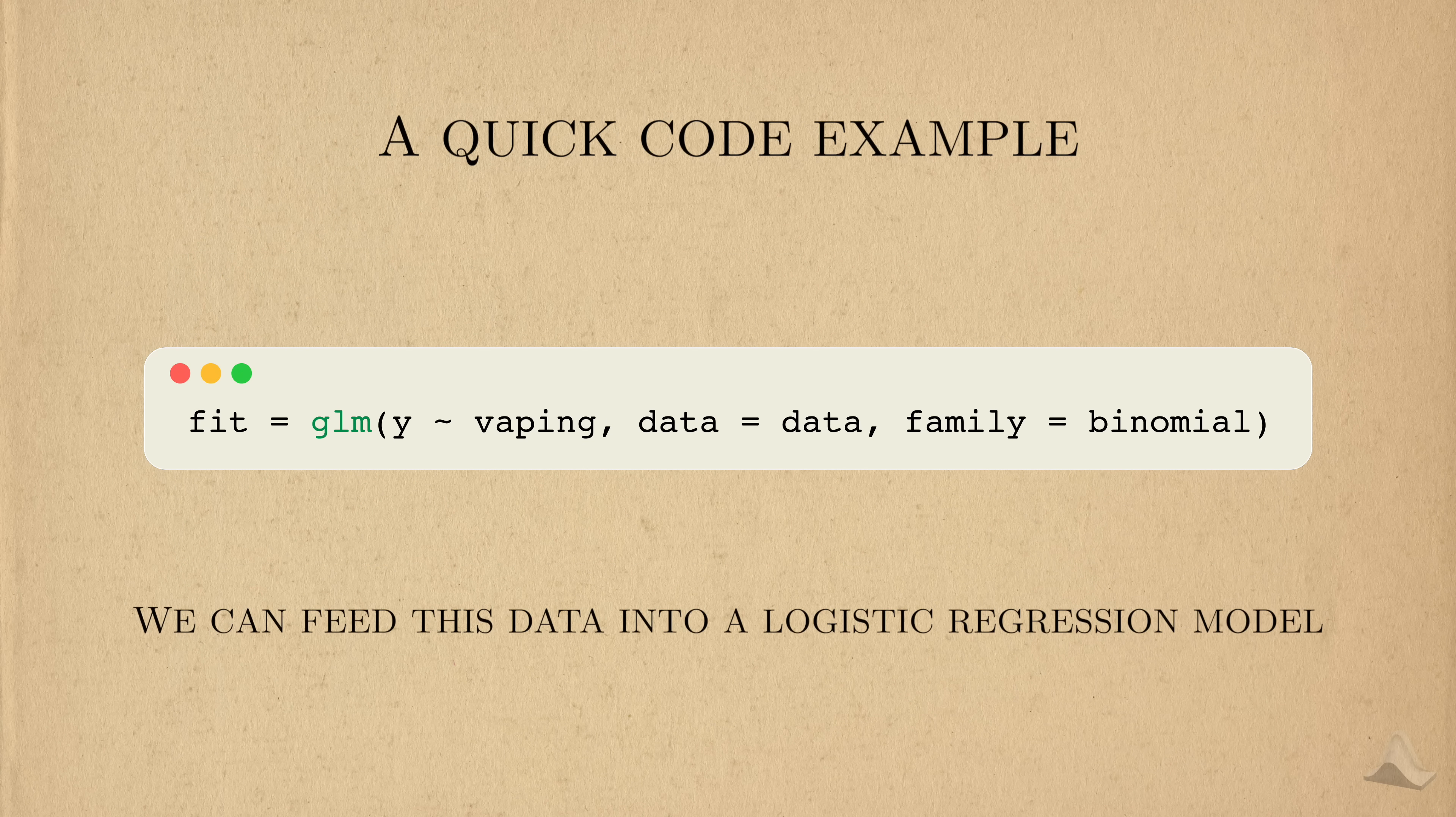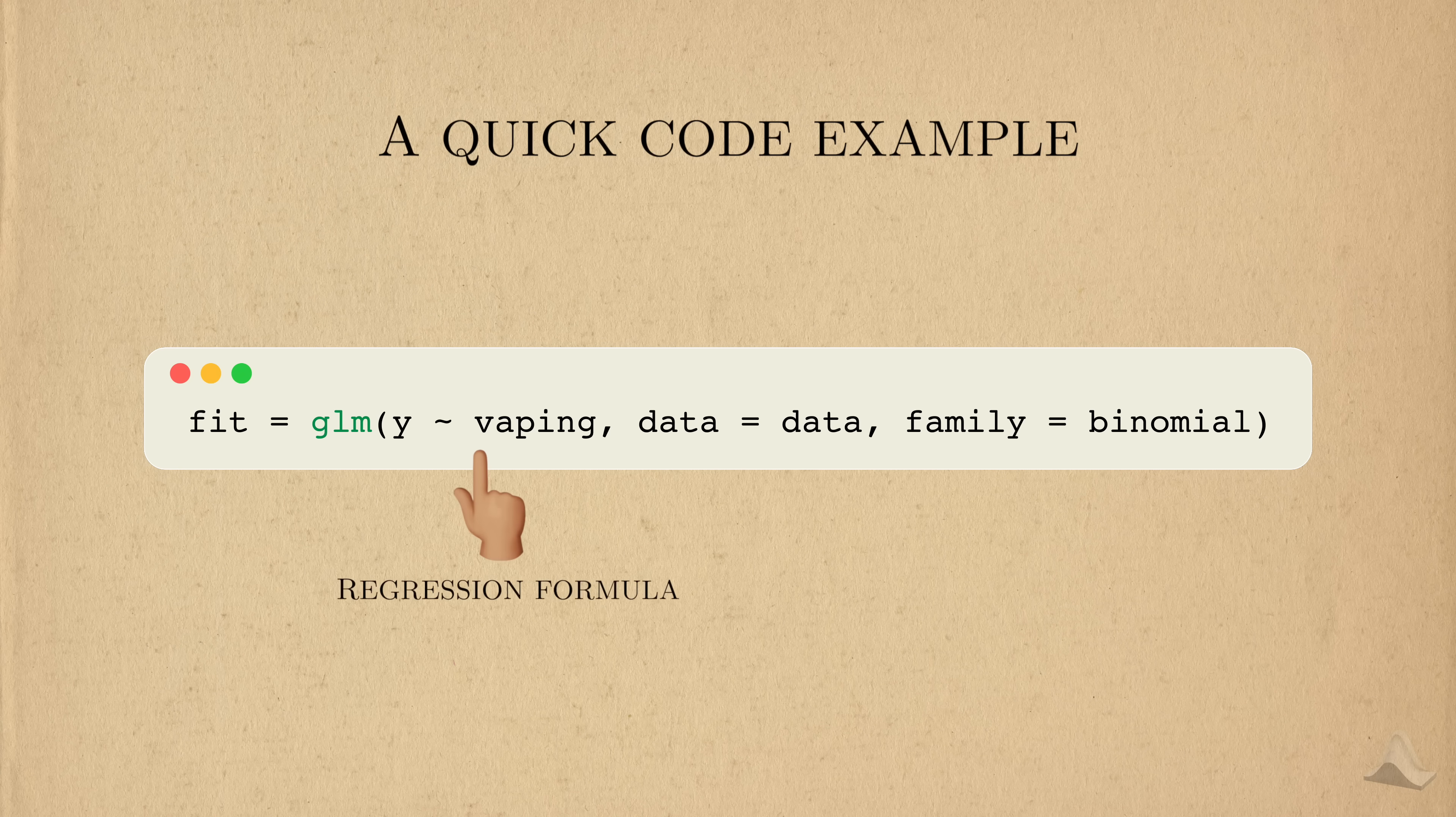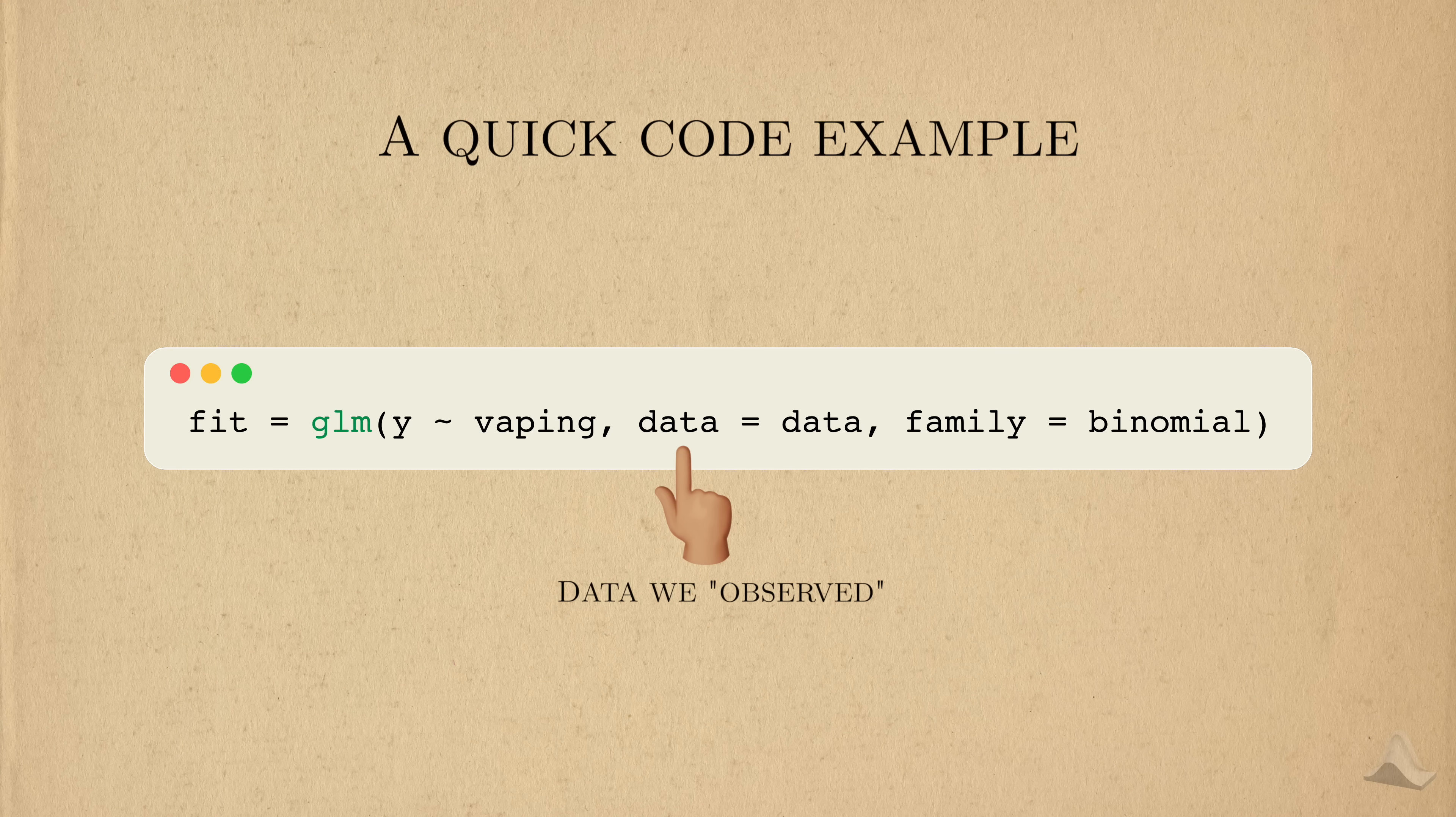Now that we have the data mocked up, we can create a logistic regression model using the glm function in R. I won't spoil what glm stands for, but it's something that you'll be seeing again in the near future. Within glm, we need to specify what the outcome and covariates are using R's formula notation, the data we collect and want to use, and finally, the type of outcome we're working with.